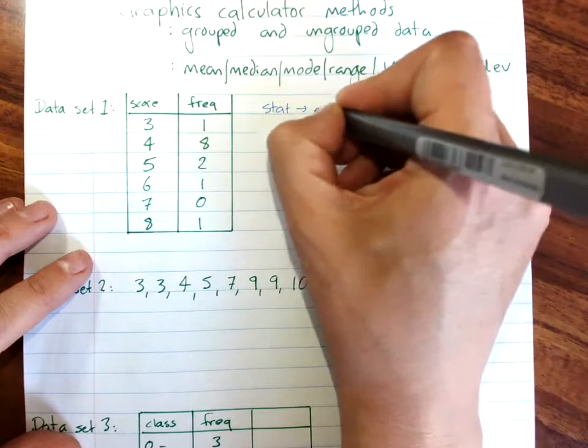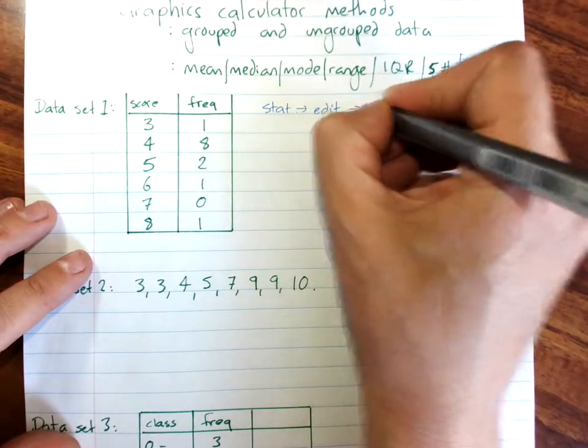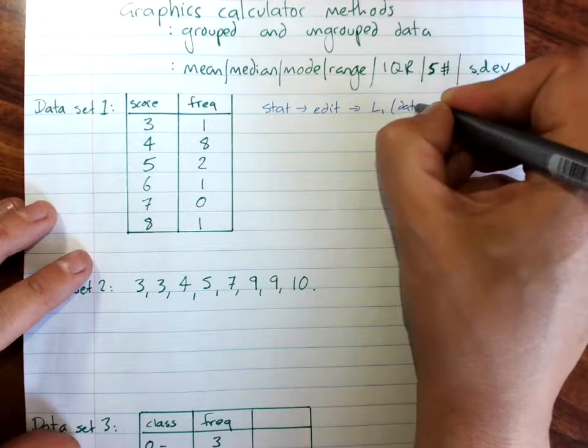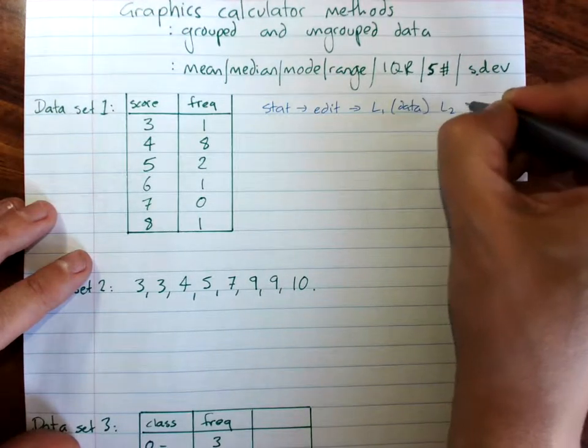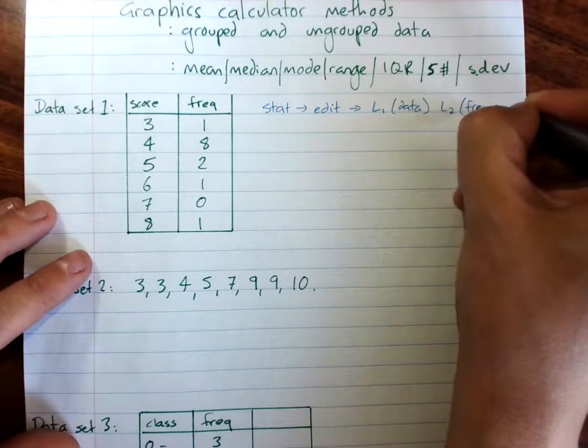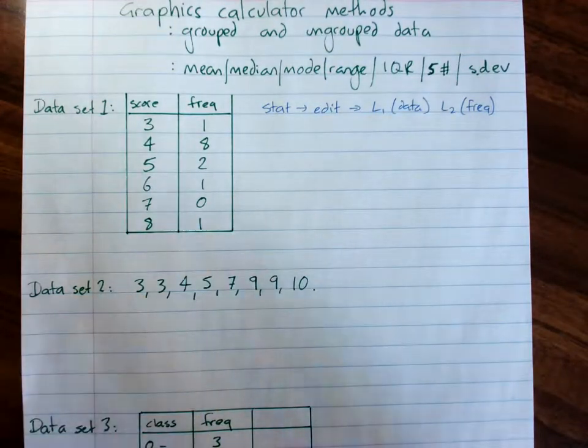Stat, edit, L1 for the data, and L2 for the frequency. And you just enter your data as a frequency table.